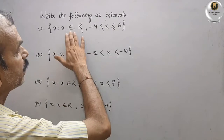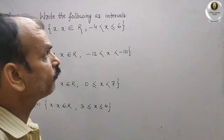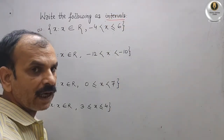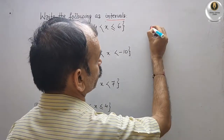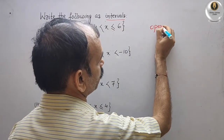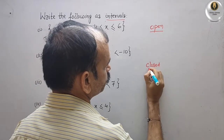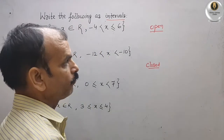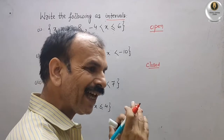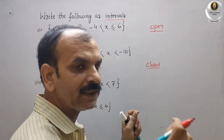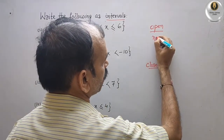The question is to write the following as intervals. First, we will understand what intervals are. There are two types: open intervals and closed intervals. In an open interval, we are not counting the extremes — whatever the range is, the extreme values are excluded.